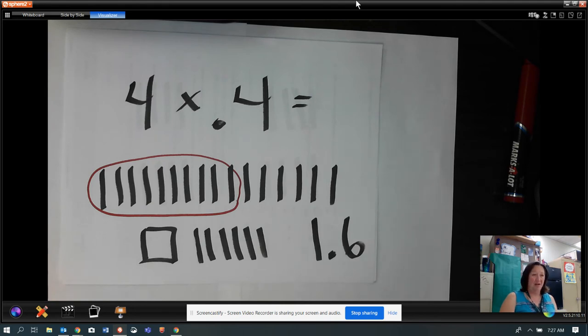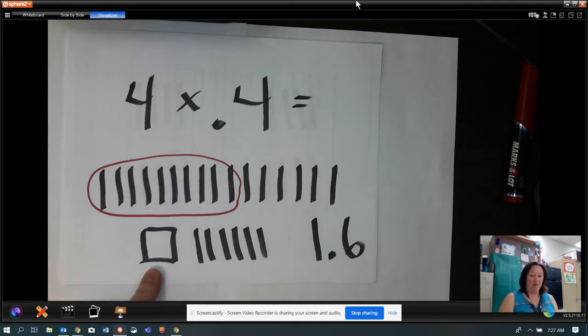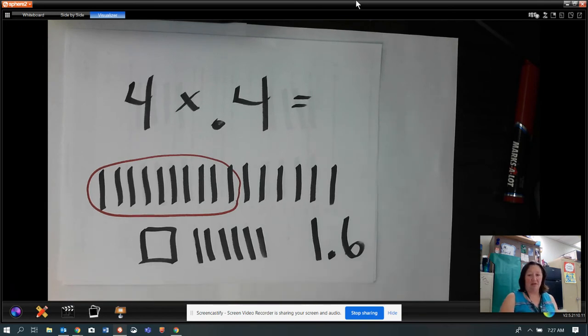I know that ten tenths can make a whole. So I circled the ten tenths, and I pulled out a whole. So now I have one whole and six tenths left over. So then my answer becomes one and six tenths.